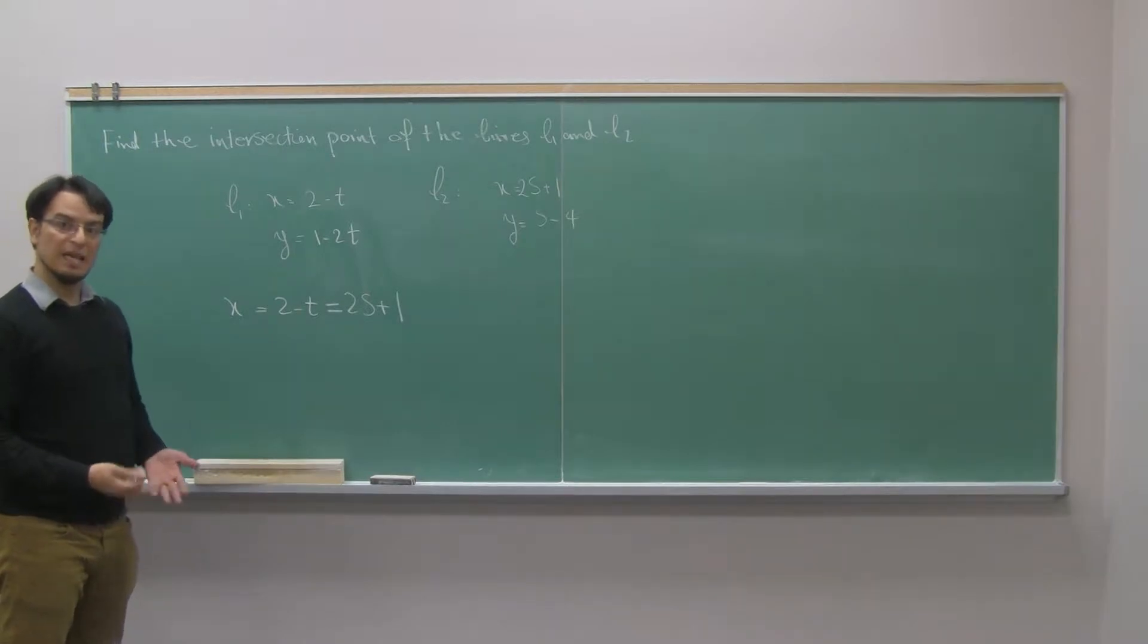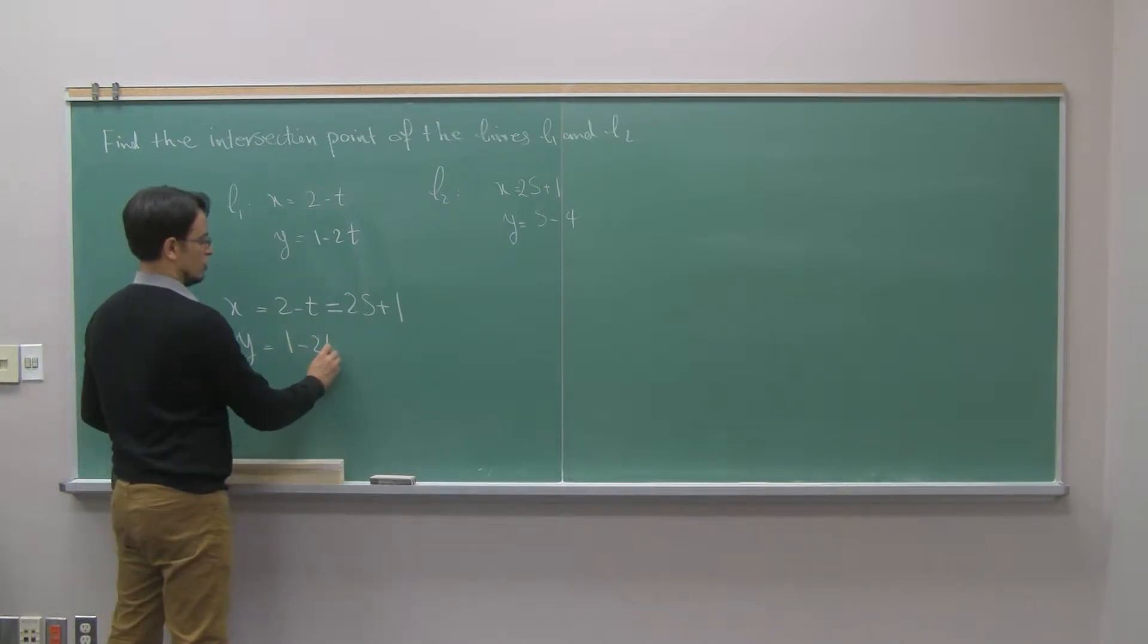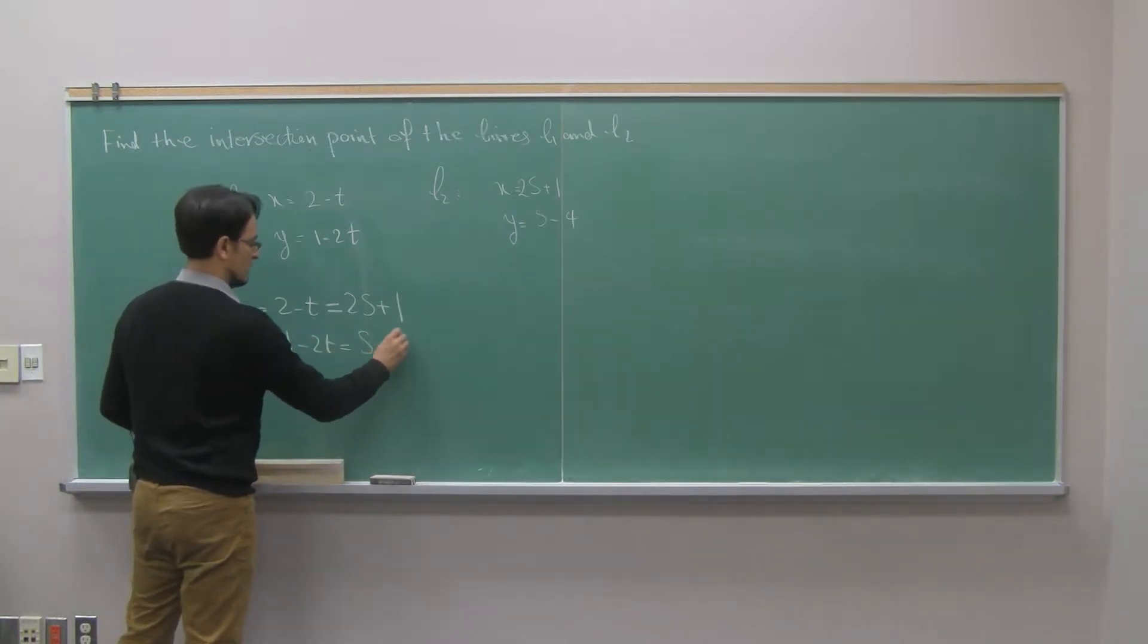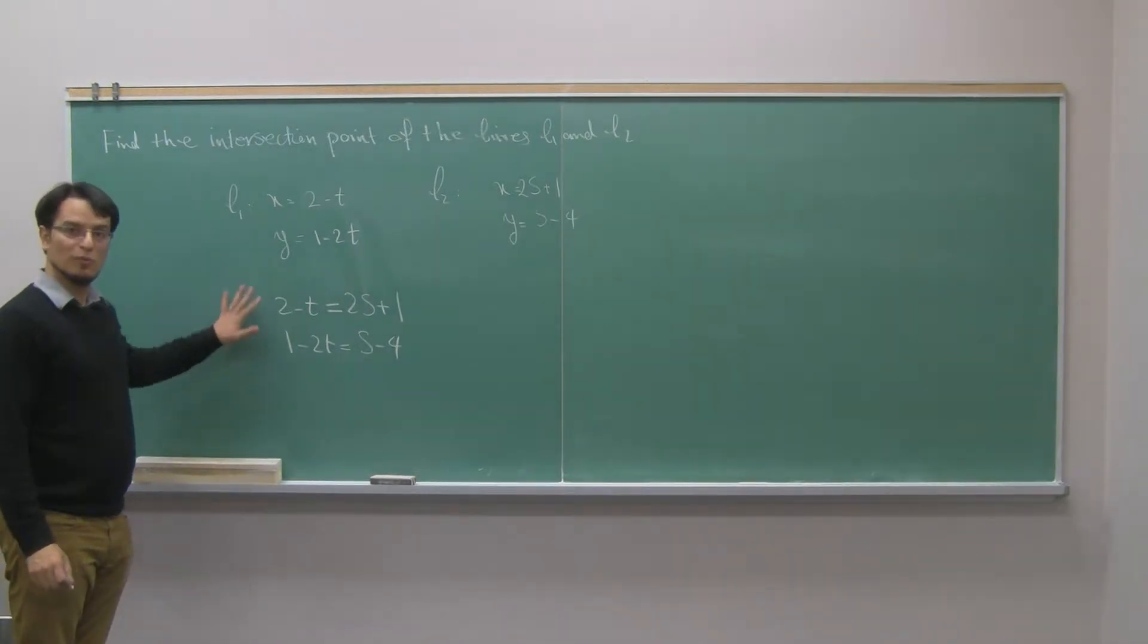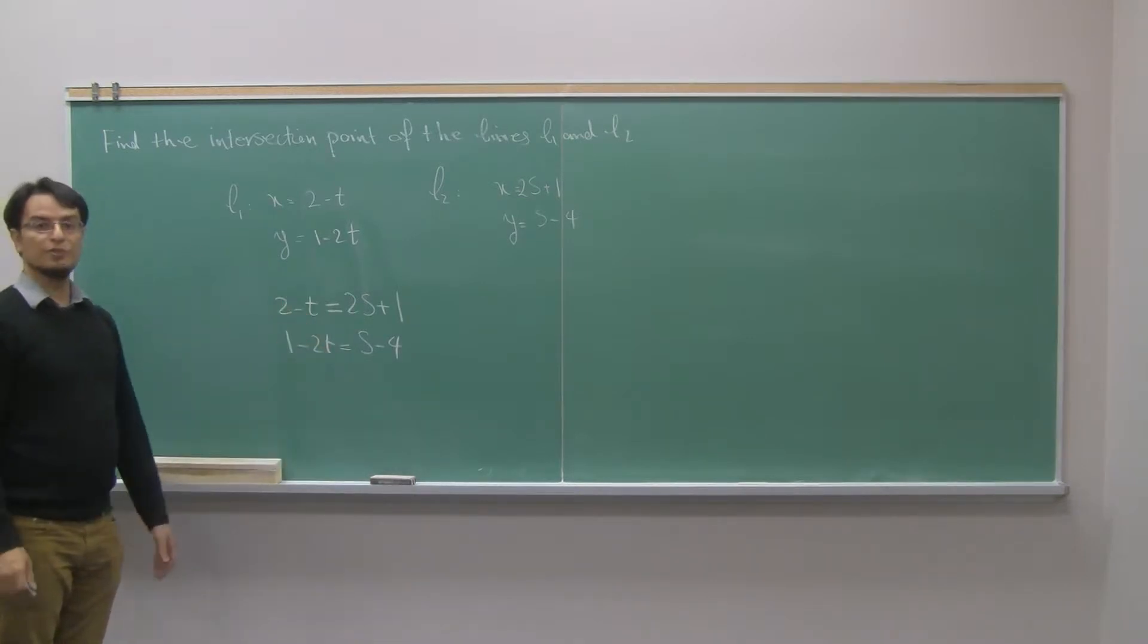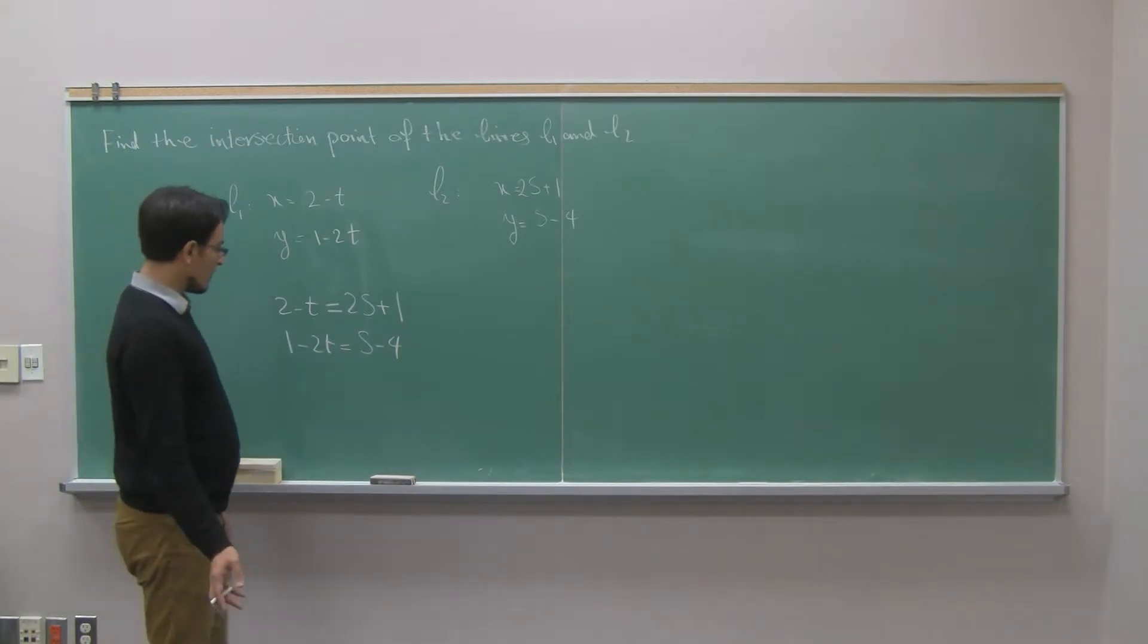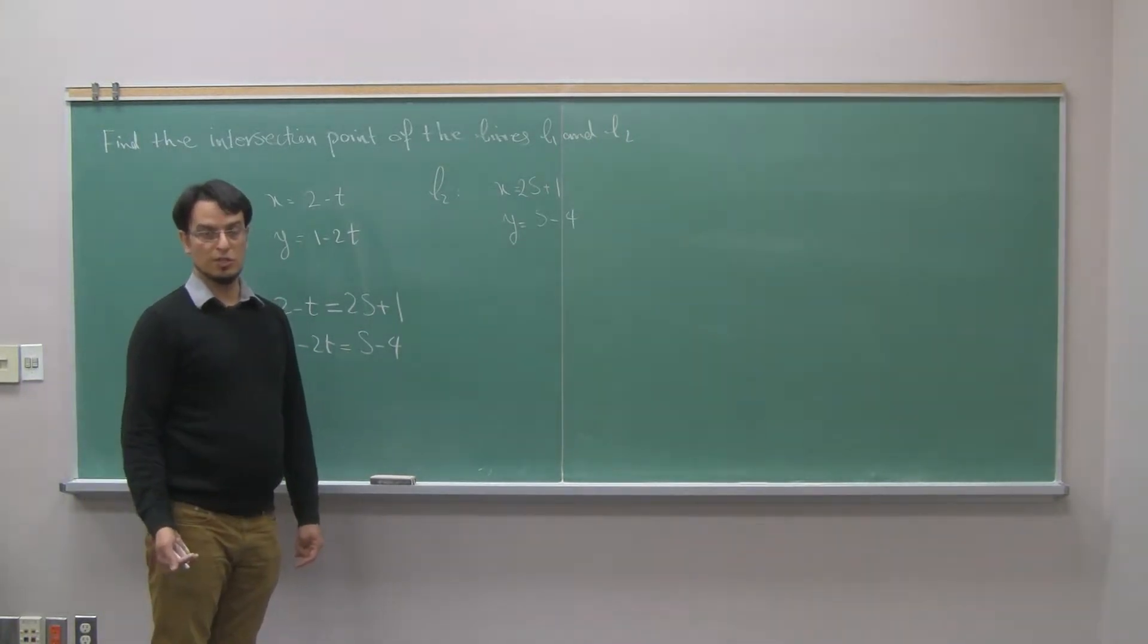And exactly same theory for y. So y is 1 minus 2t, and it is 2s minus 4. When you know what is the theory behind, then you can get it out of that part. Now I have two equations and two variables. I have to solve these equations and find values for s and t.